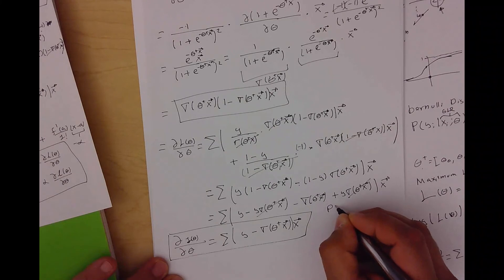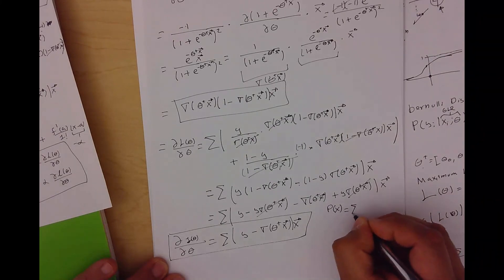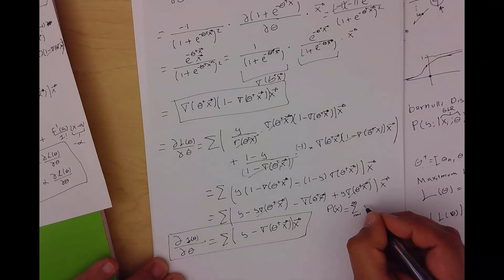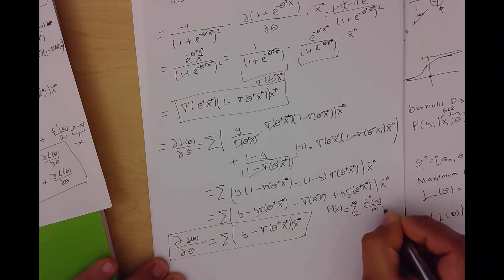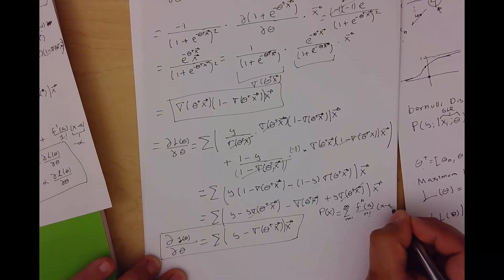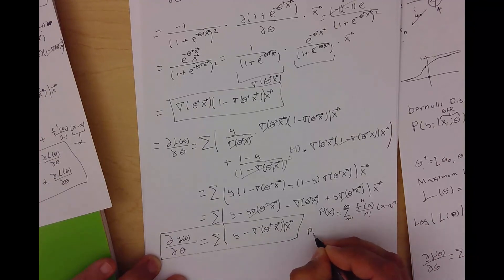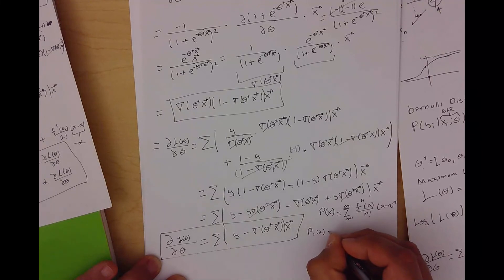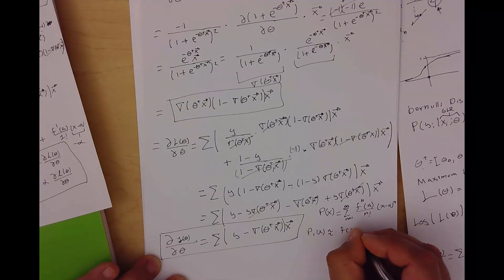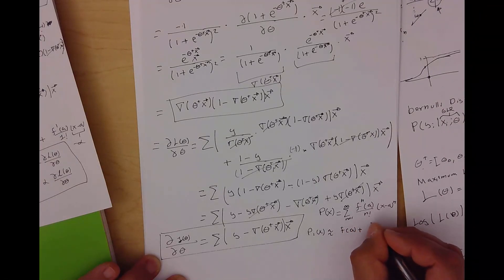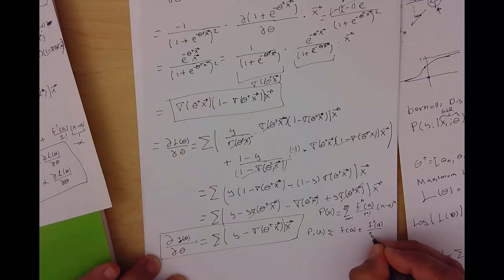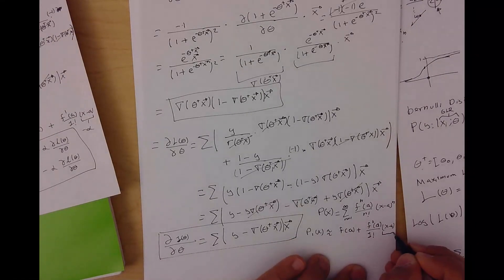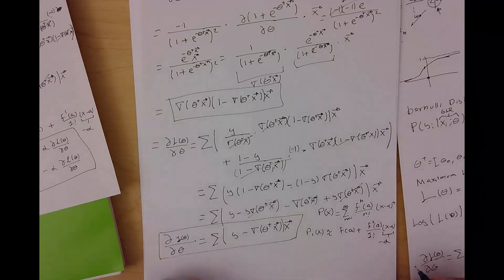To do the optimization, recall that we can have a function in its Taylor expansion: the function approximated is the function at a point plus the first derivative of the function multiplied by (x minus a). This part we are going to call the learning rate.